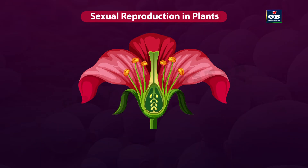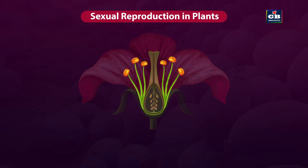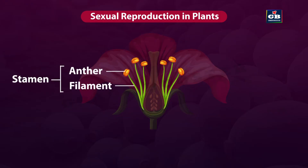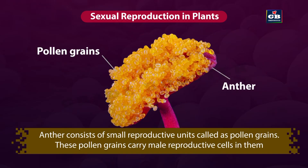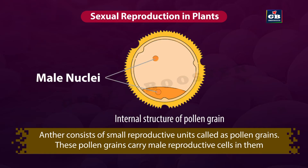Now let us study the reproductive parts of the flower. Stamen has two main parts named as anther and filament. Anther consists of small reproductive units called pollen grains. If we touch the stamen of a flower, some yellow color dust-like material sticks to our fingers. It is nothing but pollen. These pollen grains carry male reproductive cells in them.